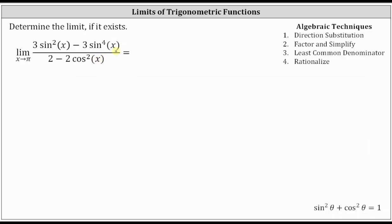For this example, we will take the approach of factoring and simplifying. So beginning with the expression for the given function, notice the greatest common factor in the numerator is three sine squared x, and the greatest common factor in the denominator is two.